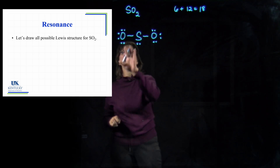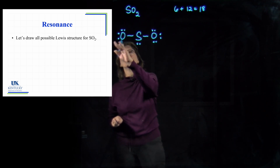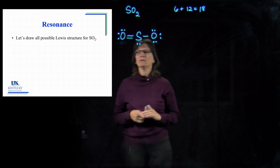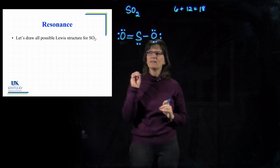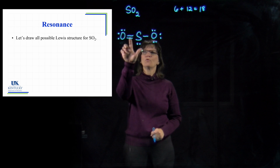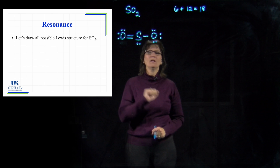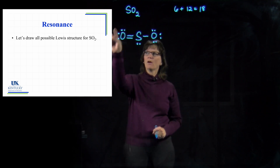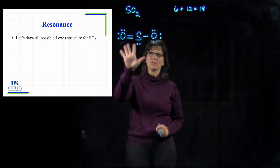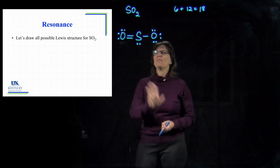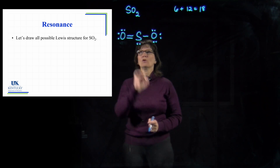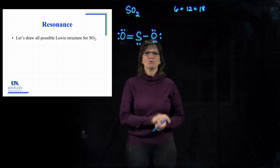Let's shift those two electrons in. Now did that make sulfur happy? Sulfur has 2, 4, 6, 8 — yes. It didn't make oxygen unhappy either — oxygen still has 2, 4, 6, 8. Everybody has eight electrons, and that is one Lewis structure of SO2.